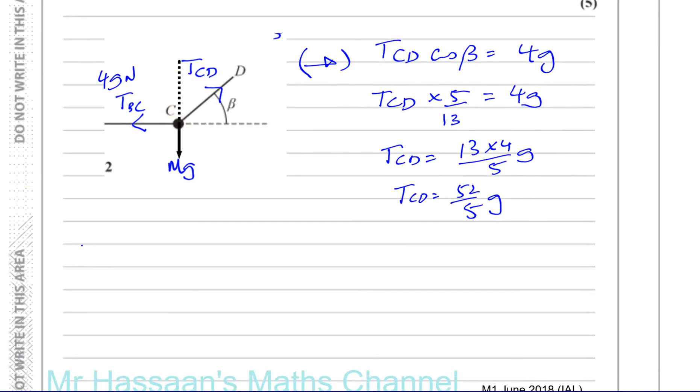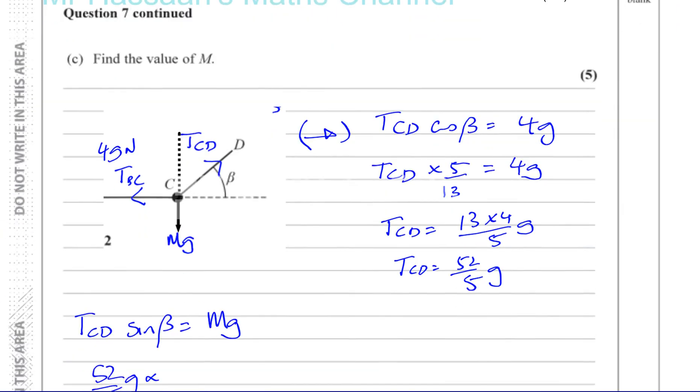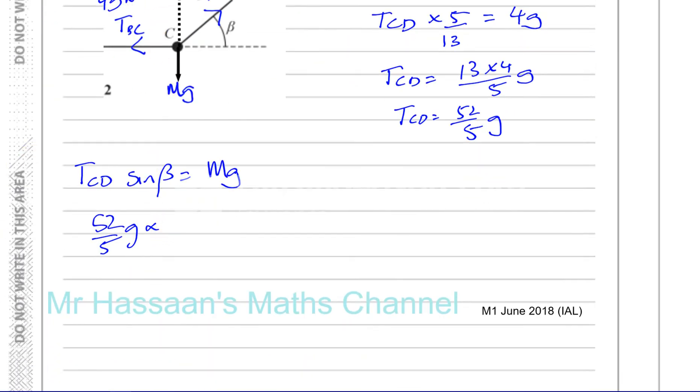To find the value of M, we can now say the tension in CD, which is this, times... And you're going now away from the angle, so it's going to be sine of beta, times the sine of beta, is equal to Mg. And the tension in CD is 52 over 5 G. And the sine of beta is 12 over 13. 12 over 13, so that's times 12 over 13, equals Mg. The G's cancel out, so we're left with this as our answer. I think 13 goes into 52 4 times. So you have M equals 4 times 12 over 5.